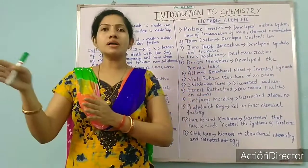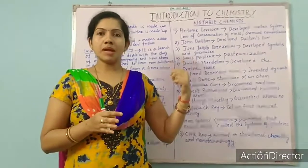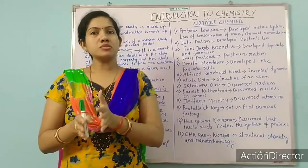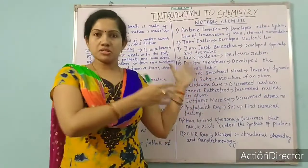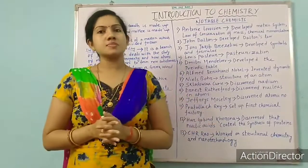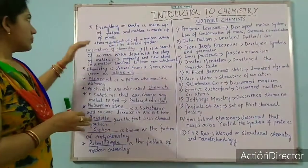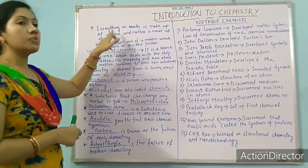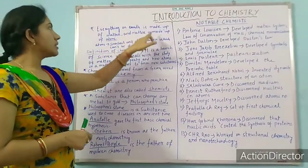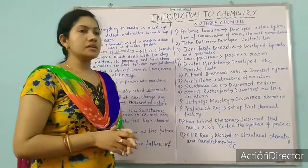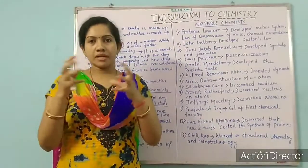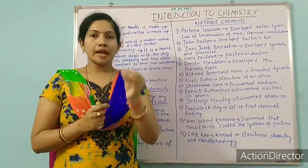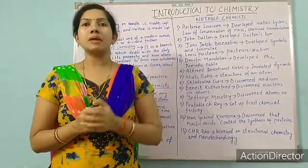So in this chapter we will have some introductory part for chemistry. I have also prepared a note for you; one by one I will explain, and at last I will give the picture of this explanation. So here I have written: everything on earth is made up of matter, and matter is made up of atoms. I think you all have some idea about what an atom is.